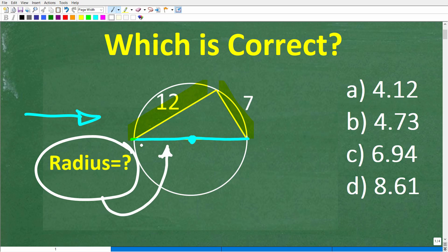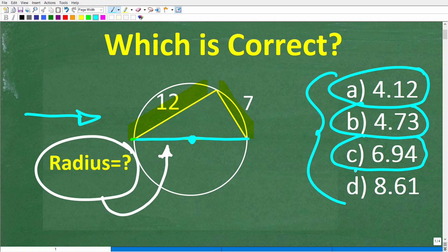So what is the radius of this circle given this information? We have a multiple choice question here. A is 4.12, B is 4.73, C is 6.94, and D is 8.61.